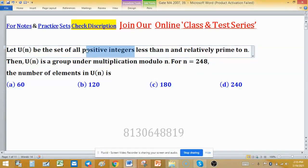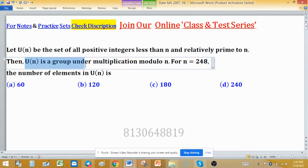Let U(n) be the set of all positive integers less than n and relatively prime to n. Then this set U(n) is a group under multiplication modulo n, and for n = 248, the number of elements in U(n) is...